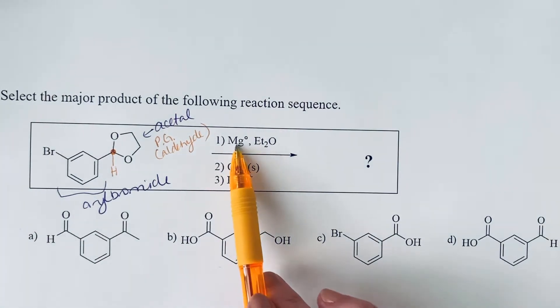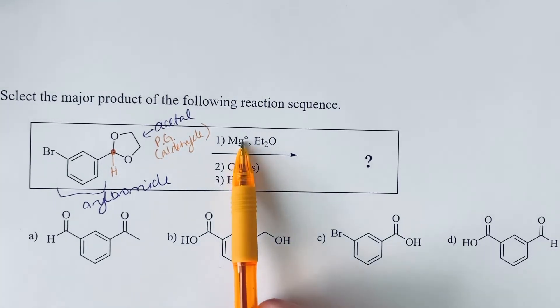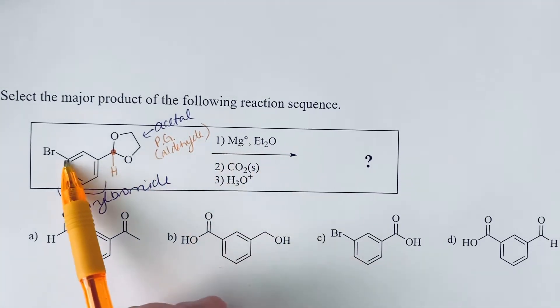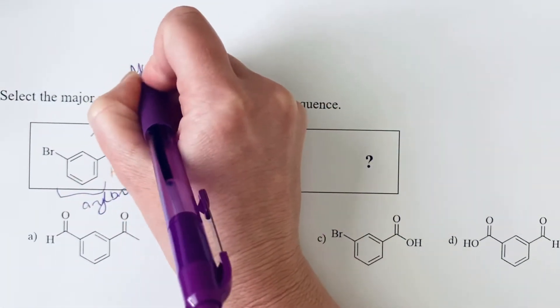So the first thing we're doing is we're adding magnesium metal and diethyl ether. So with an aryl or alkyl bromide, these are conditions to make a Grignard reagent that magnesium is going to insert in between the carbon bromine bond. So that's what's going to take place in this first step.